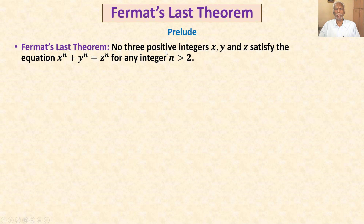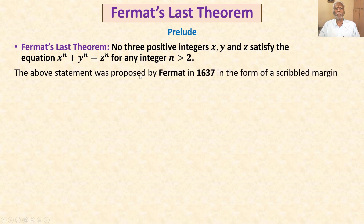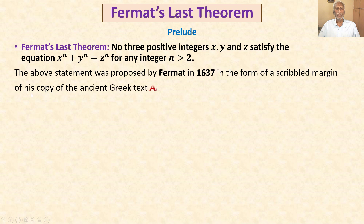That means there do not exist natural numbers x, y, z satisfying x^n + y^n = z^n for integers n greater than 2. The above statement was proposed by Fermat in 1637, scribbled in the margin of his copy of the ancient Greek text Arithmetica by Diophantus.